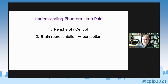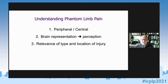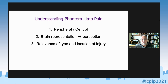Brain representation leading to perception is the second major area — involving psychology, neuropsychology, and neurobiology. To what extent are our perceptions based on brain representations? Are they anatomical representations like the famous homunculus, or functional representations? Can these representations change the cortex in a way that produces alterations in perception? The relevance of type and location of injury is also important: historical anecdotes show that certain locations produce no phantoms while others produce very important phantoms, and whether an amputation is traumatic or surgical may also matter.